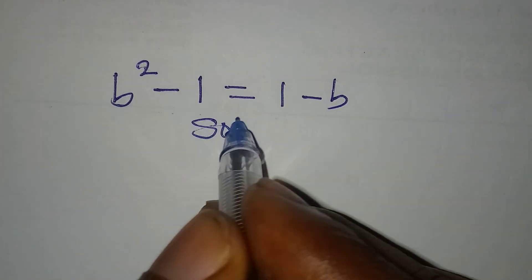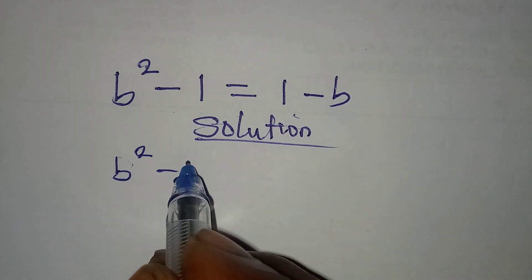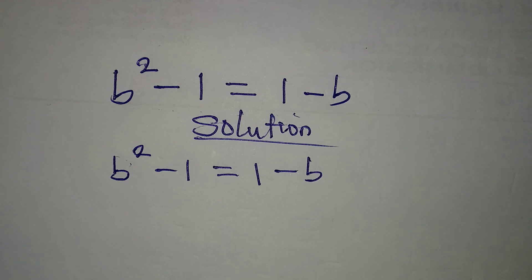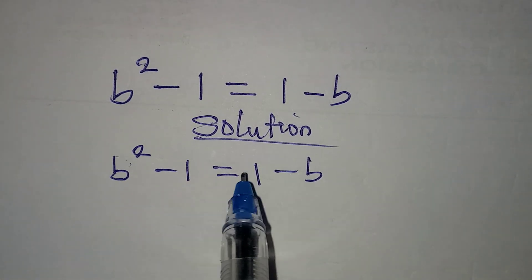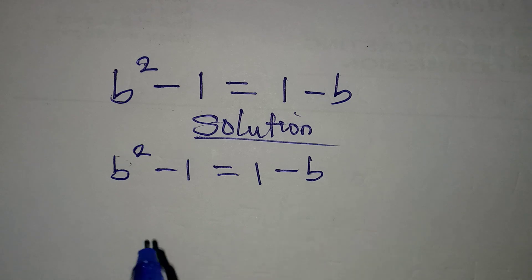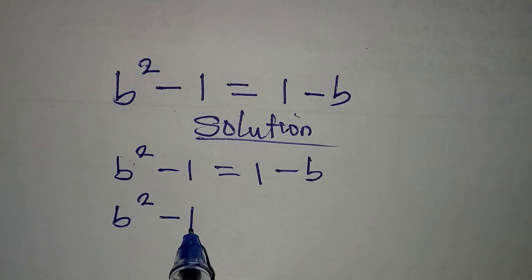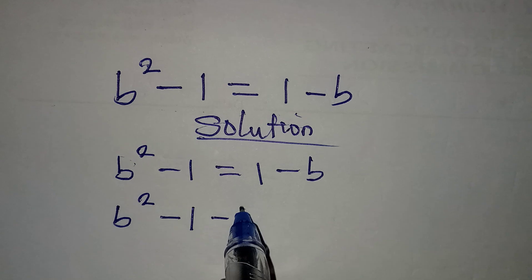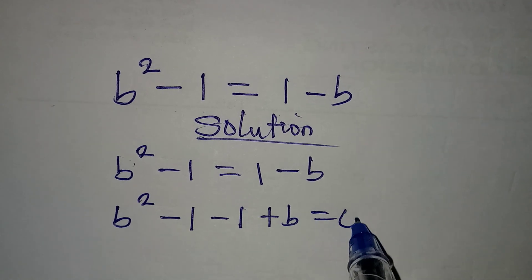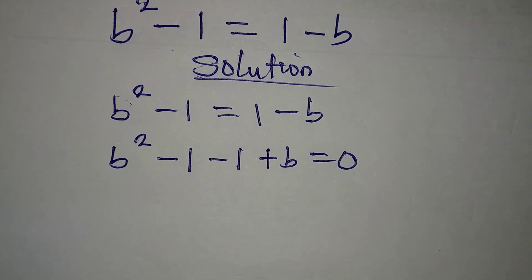Let's solve this problem: b squared minus 1 equals 1 minus b. The first step — can we cancel the 1? No, because they don't have the same sign. So we bring everything to the left, giving us b squared minus 1, then minus 1 comes over, and plus b comes over, everything equal to 0.